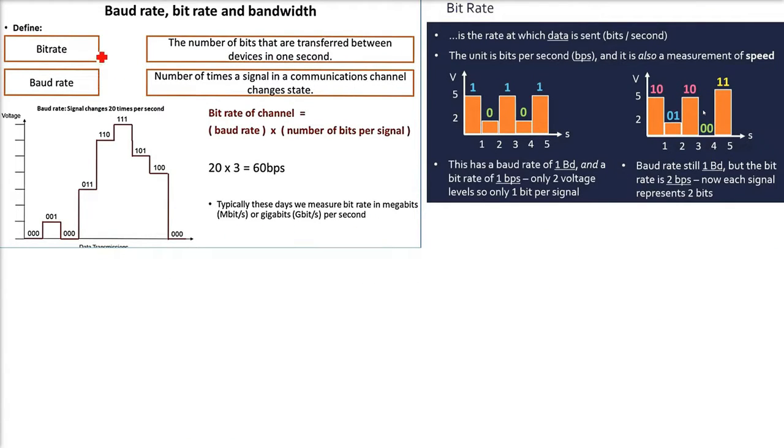Bitrate and baud rate. Bitrate is the number of bits that are transferred between devices in one second. We call it bitrate. You can also call it the speed. This is the rate at which the data is sent. One second, how many bits are sent? The unit is bit per second. You can also call it a measurement of speed.